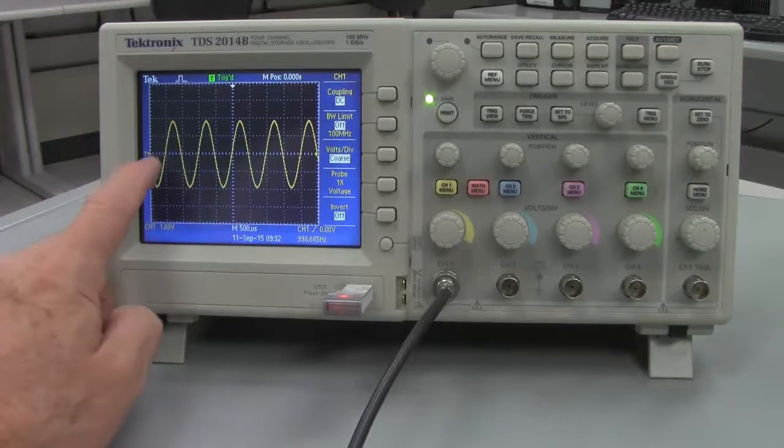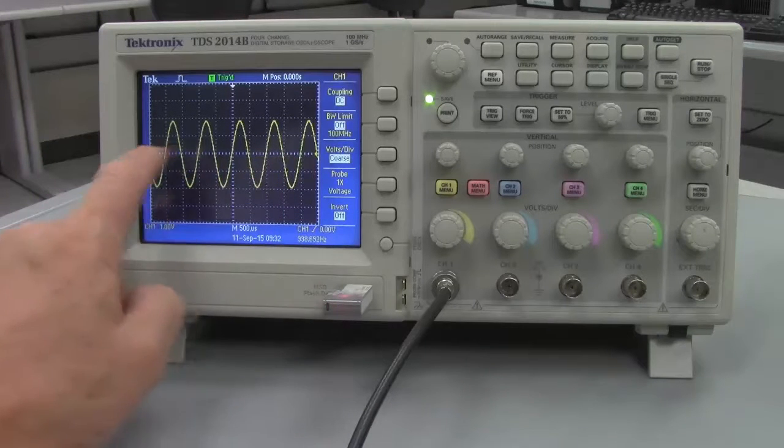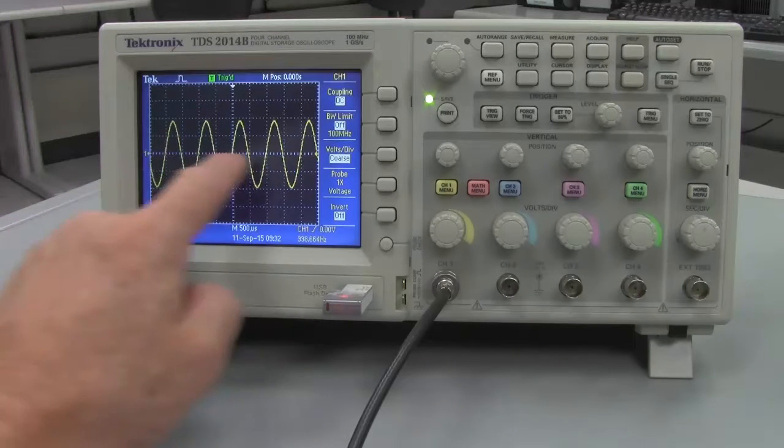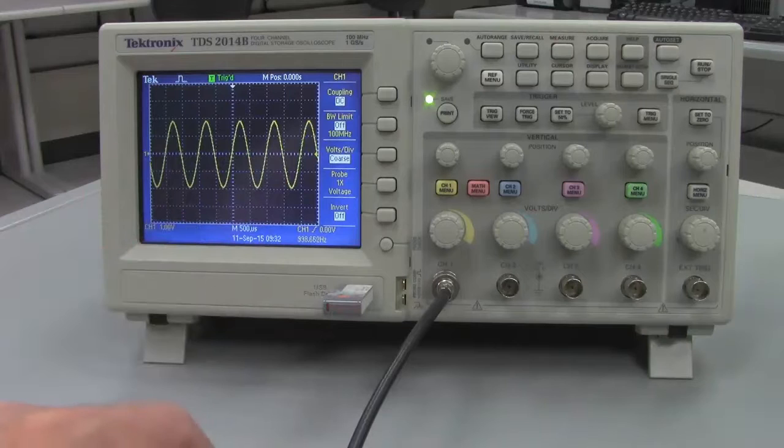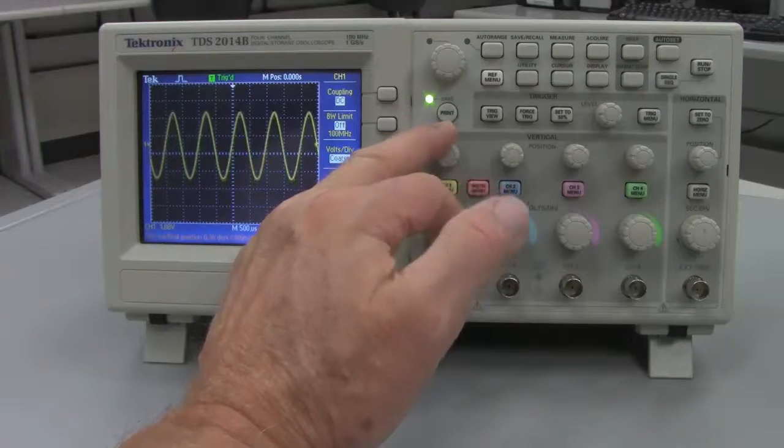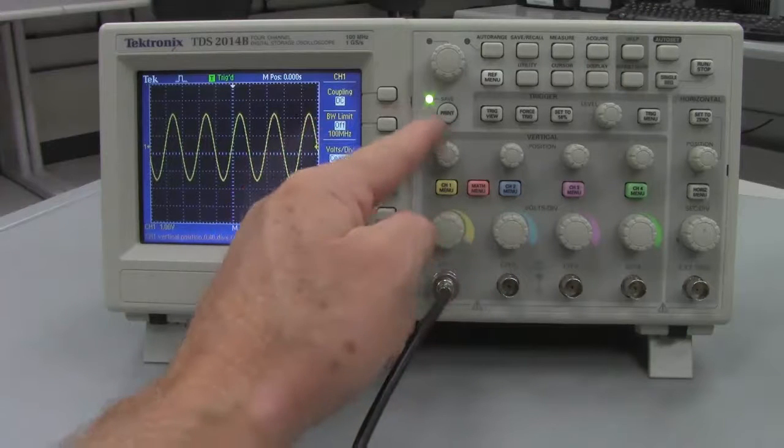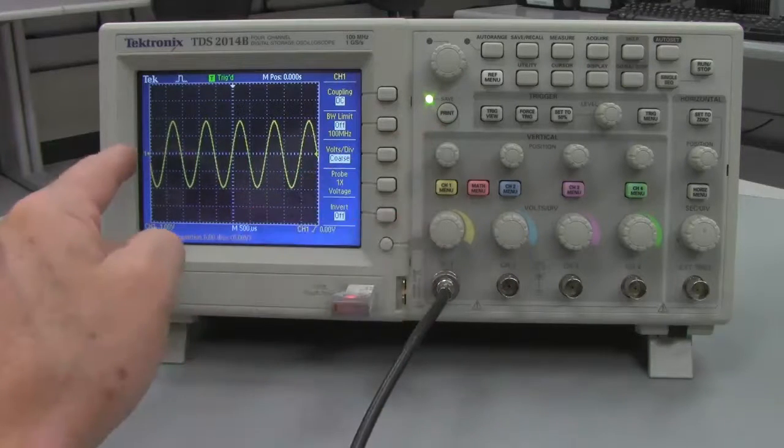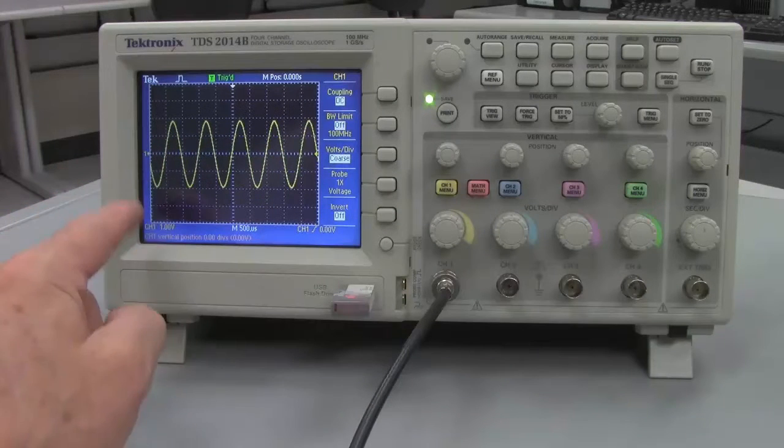Now we see that the signal coming out of the signal generator is only almost 2 volts in the positive direction and almost 2 volts in the negative direction. Now it came up in the default with the center location, the center voltage, or zero voltage, right here at the center line. Had it not, or if we wanted to adjust that, we can adjust the vertical position by turning this knob right there.